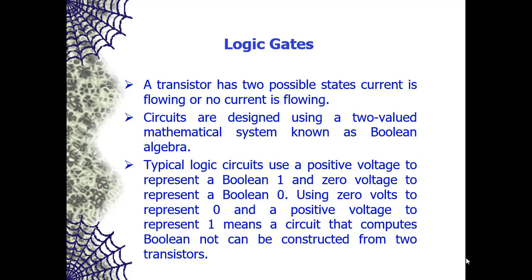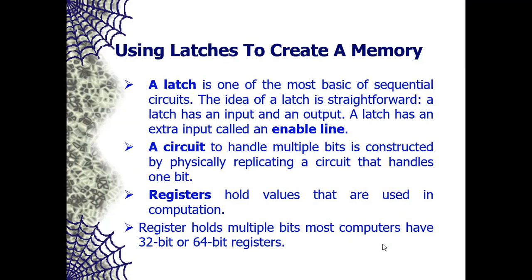For the Boolean NOT function: when a positive voltage is placed on the input, the output will be zero; when zero voltage is placed on the input, the output will be positive. This means a circuit that computes Boolean NOT can be constructed from just two transistors — the circuit takes an input on one wire and produces an output on another wire where the output is always the opposite of the input.